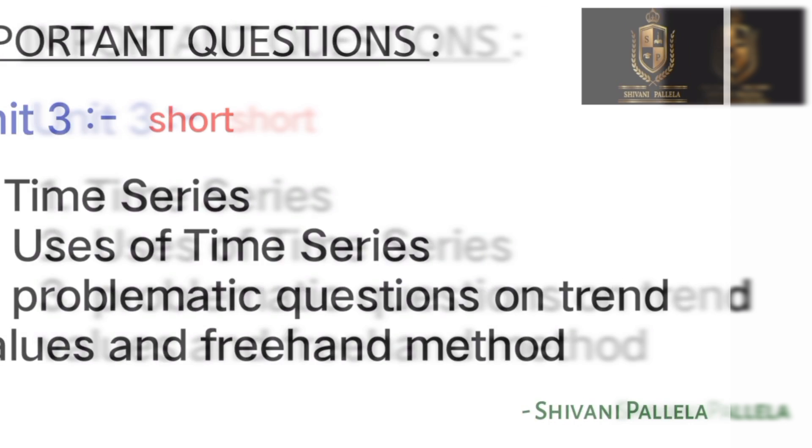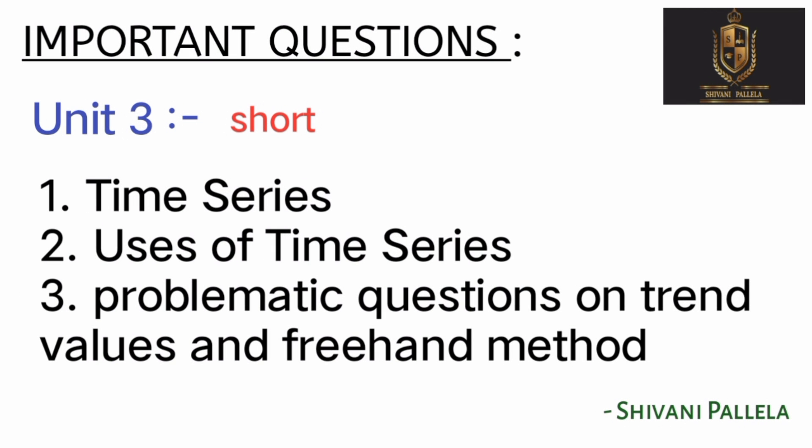For Unit 3 short questions, only two theory questions are needed: Time Series and Use of Time Series. The problematic method involves trend values and the freehand method. Two theory questions are enough for Unit 3 short.